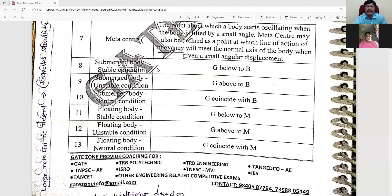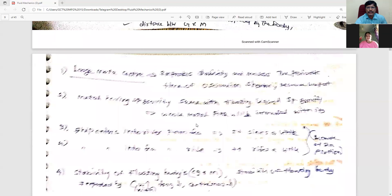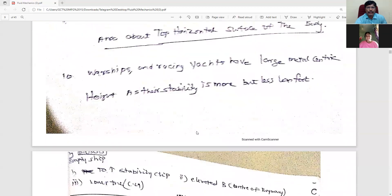The title is stability of the body. The conditions are stable, unstable, and neutral, for both submerged body and floating body. For a submerged body, the center of gravity relates to the center of buoyancy. For a floating body, the center of gravity is compared to the metacenter. These are the two concepts for stability conditions.